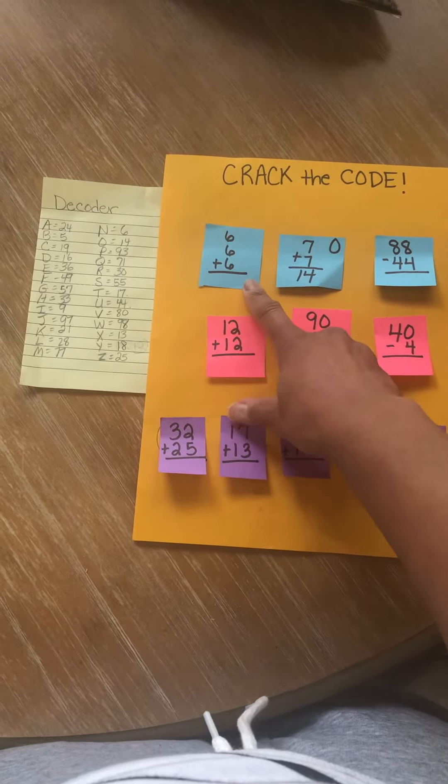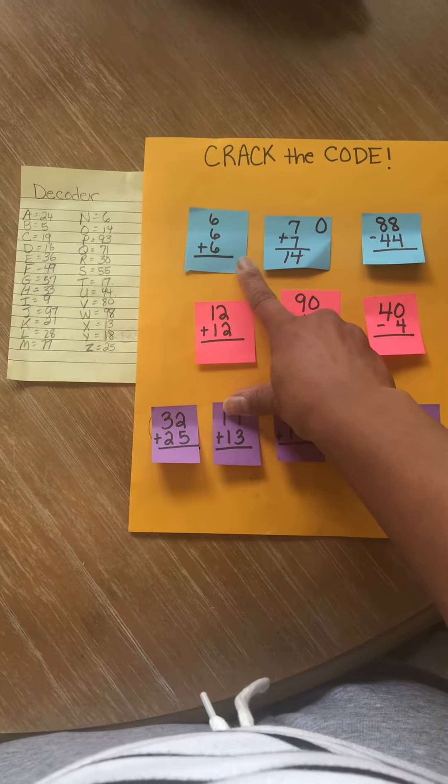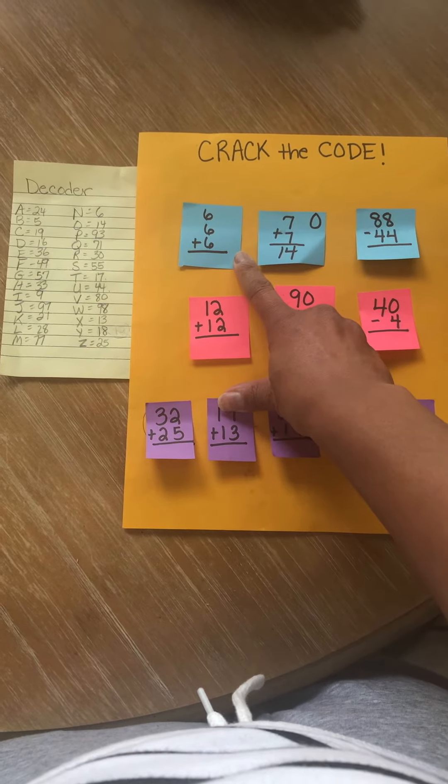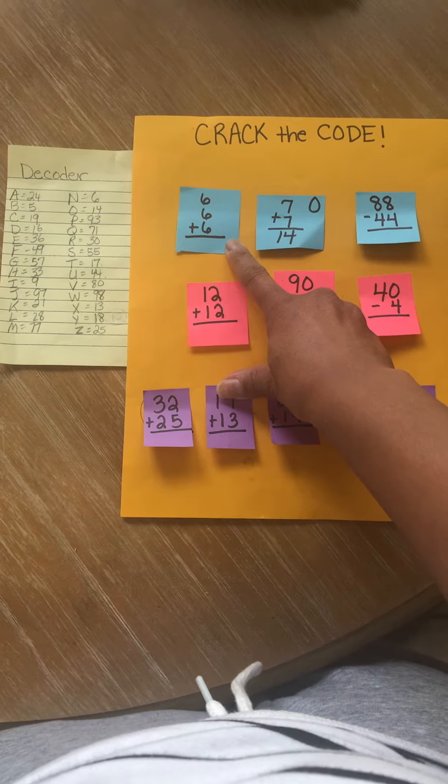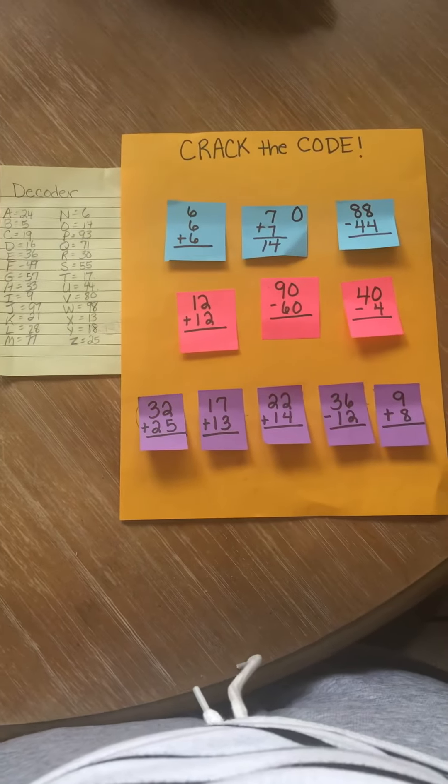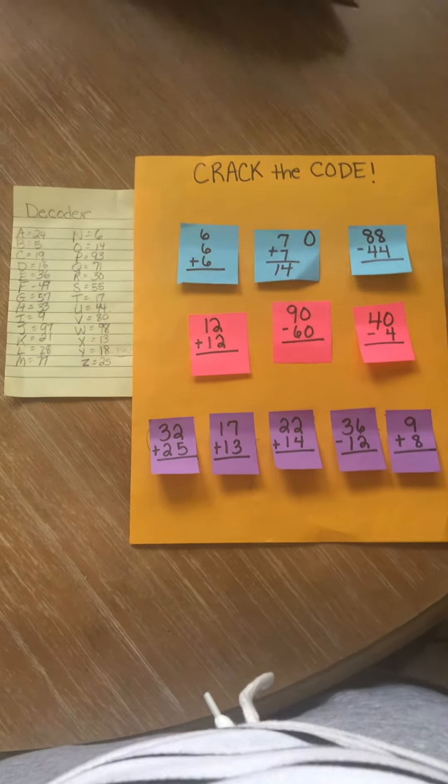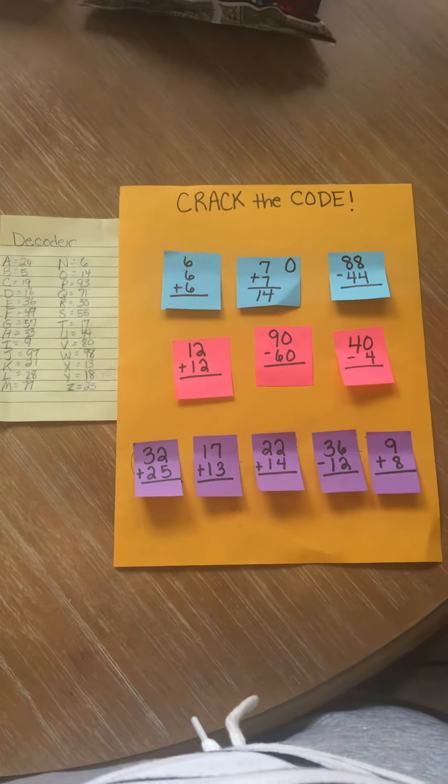Again, I made a mistake in the first video. This is the new video. This problem should be 6 plus 6 plus 6. So you're adding 6 three times. Sorry about that, guys. I checked it over. Everything else should be correct. But if I made another mistake, let me know. Okay, bye.